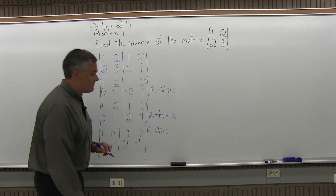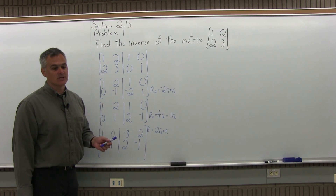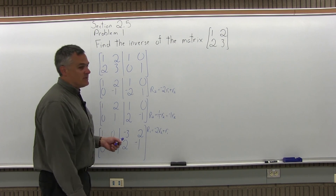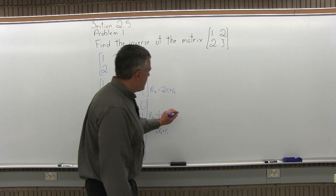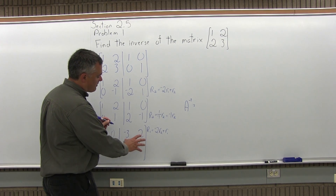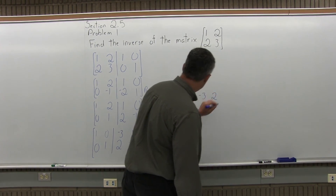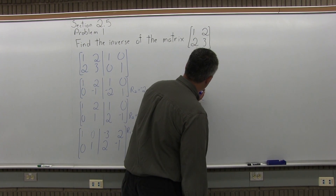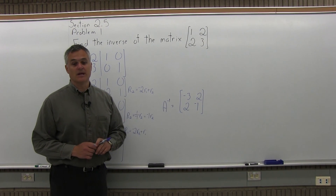Now the matrix on the left half of the double-wide matrix looks like an identity matrix: 1, 0, 0, 1. The matrix on the right half has become the inverse of the matrix we started with. So A inverse is the matrix on the right half, which is negative 3, positive 2 in the top row, and 2, negative 1 in the bottom row. That's the inverse, written with the notation A to the negative 1 power.